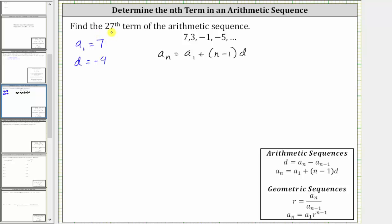If we're trying to determine the 27th term, we know n is equal to 27. So now we know that a sub 27, the 27th term, must be equal to a sub one, which is seven, plus the quantity n minus one, which is the quantity 27 minus one, times the common difference d, which is negative four.